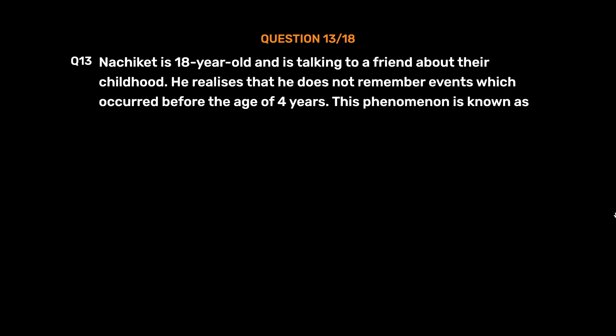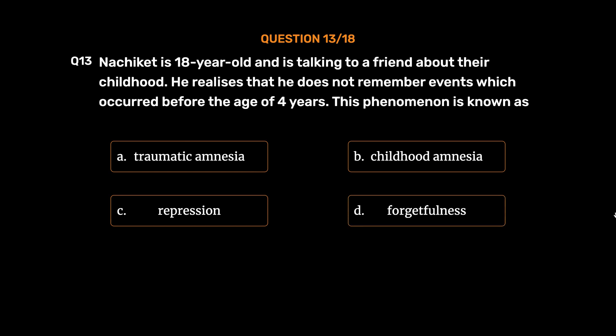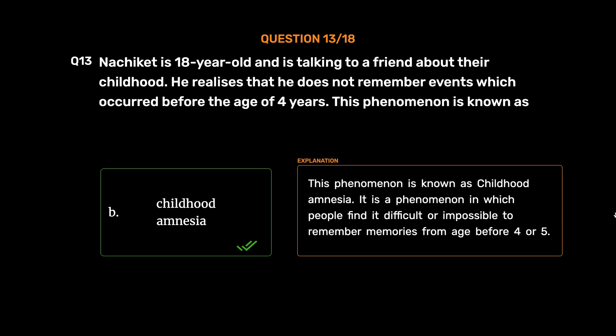Question number 13. Nachiket is 18 years old and is talking to a friend about their childhood. He realizes that he does not remember events which occurred before the age of 4 years. This phenomenon is known as: Option A: Traumatic amnesia. Option B: Childhood amnesia. Option C: Repression. Option D: Forgetfulness. The correct answer is Option B, Childhood amnesia. It is a phenomenon in which people find it difficult or impossible to remember memories from before age 4 or 5.